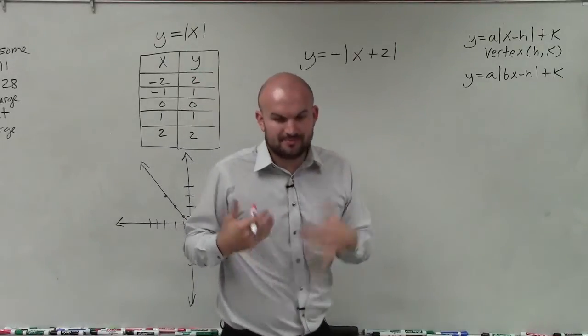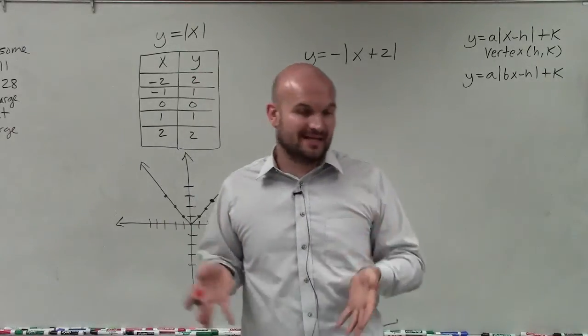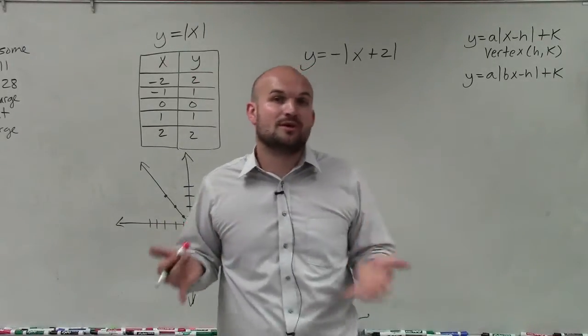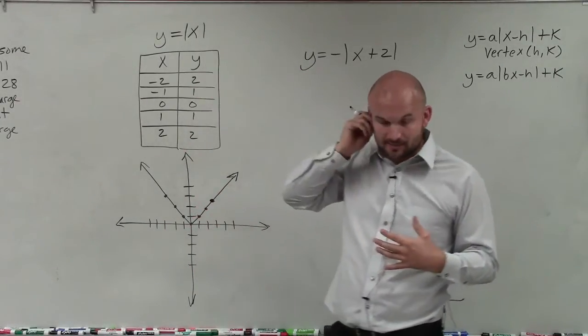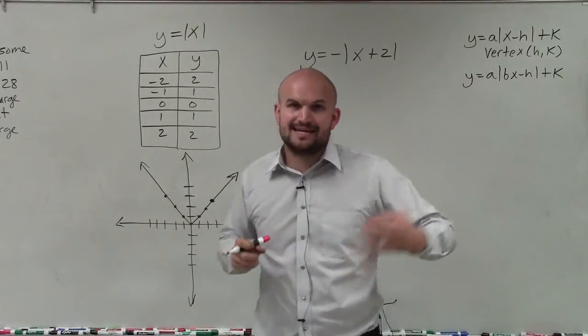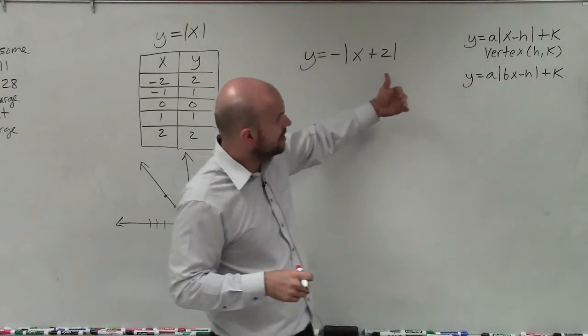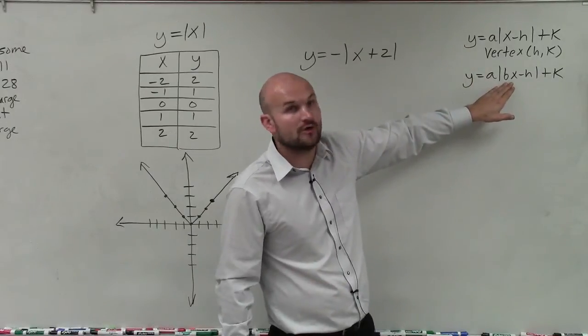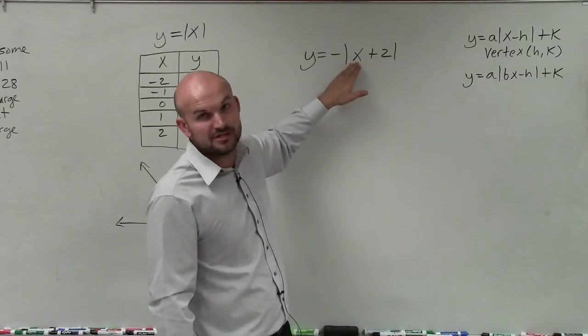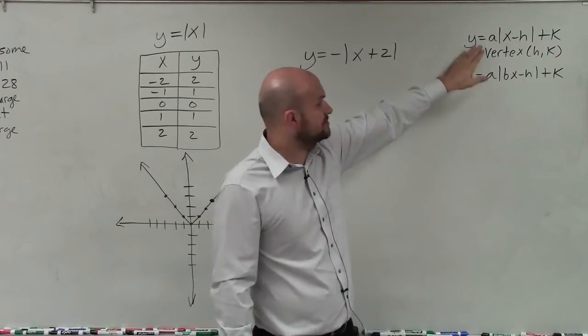The first thing we want to do is identify what that negative sign as well as the 2 are going to do to transform my parent graph, which I have over here as well as a table of values. So it's important for us to identify our transformations equations, and here's two of them. The only difference is here has a coefficient of x but this equation does not have one, so we're not going to worry about this equation. We're going to look at this one.